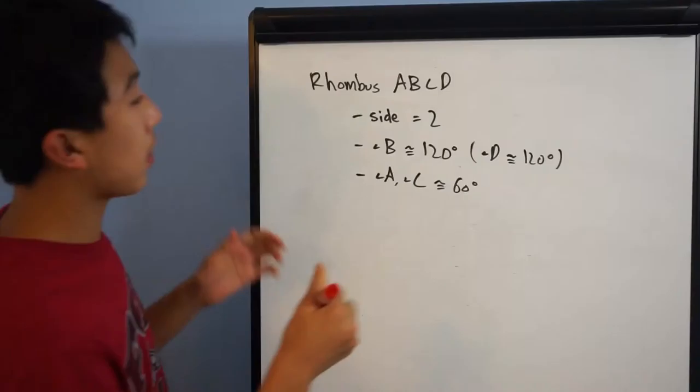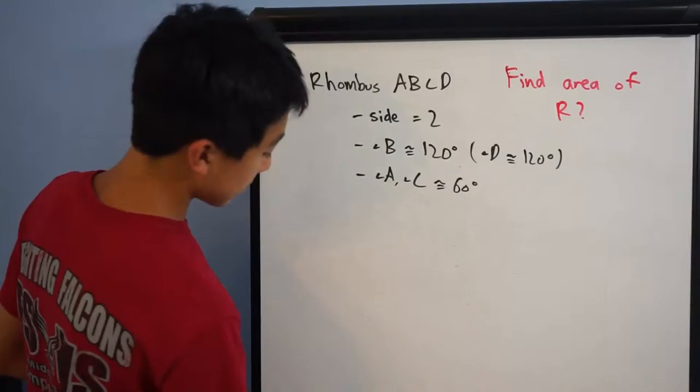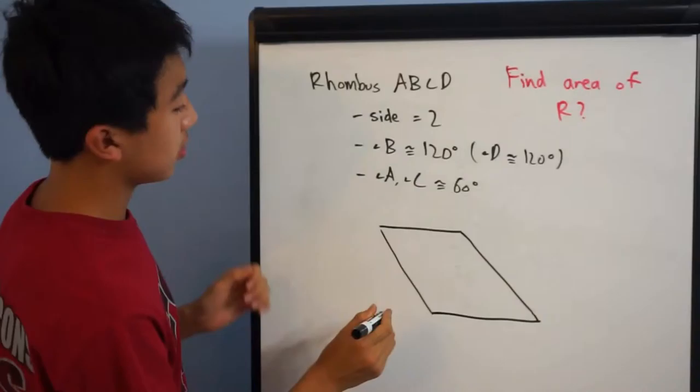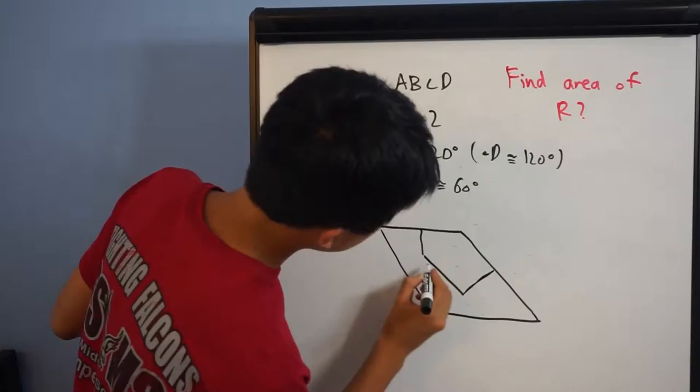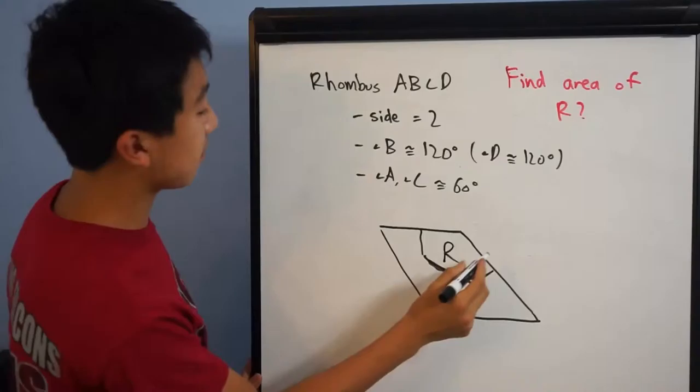The problem wants us to find — let's write it in red — the area of R. They define R as the set shown in the diagram they gave us, which looks something like this — a pentagon shape, actually. And they want us to find the area of this. This is area R.